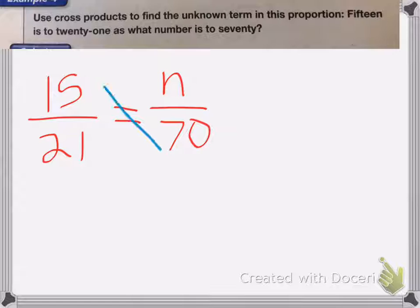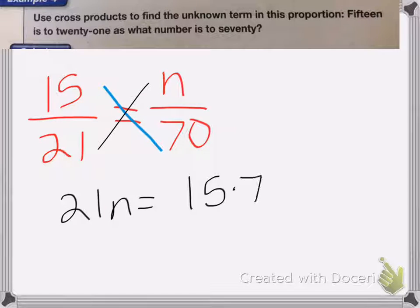Again, we're going to use cross products. And I end up with 21n equals 15 times 70.